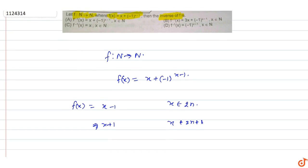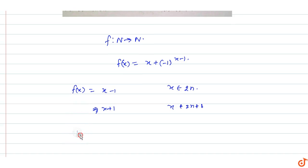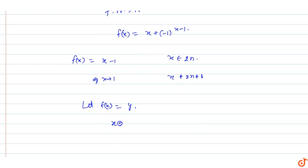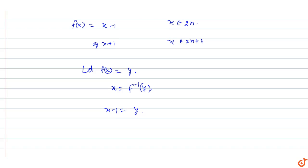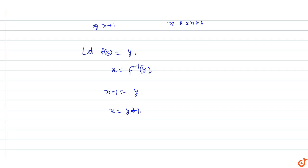So the function f(x) is defined in two cases. Now to find f inverse of x, let f(x) = y, so x equals f inverse of y. When f(x) = x minus 1 equals y, and x belongs to an even number, then x equals y plus 1.